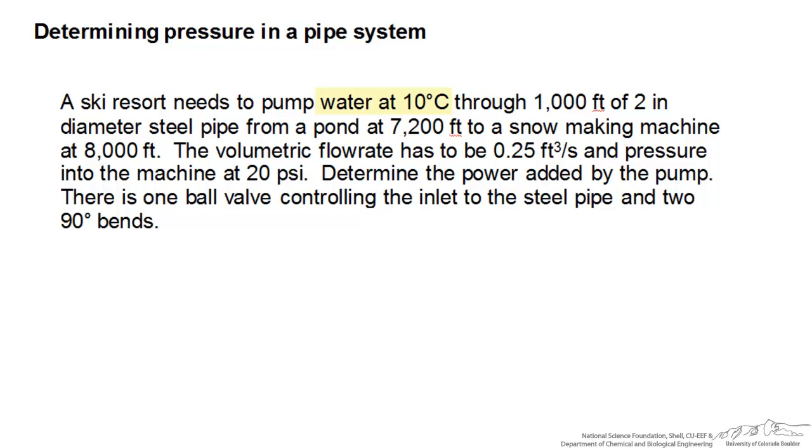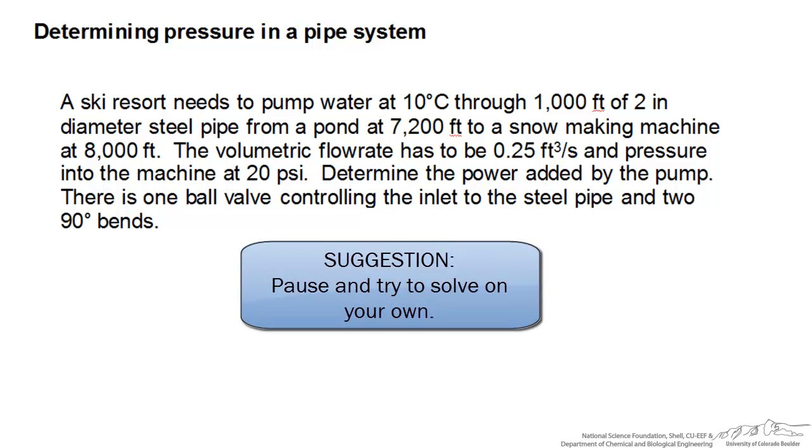We have a ski resort that needs to pump water at a certain temperature through 1,000 feet of 2-inch diameter steel pipe from one location to another at different elevations. The volumetric flow rate has to be a certain rate and the pressure into the snow blowing machine has to have a certain pressure. We're also given information about components that will contribute to losses. Try to set this up on your own and solve.